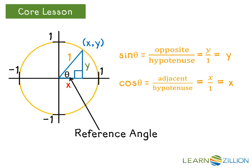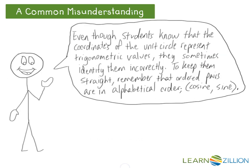This means that the x-coordinate of the point on the unit circle represents the cosine value of the reference angle, and that the y-value represents the sine value of the reference angle. Even though students know that the coordinates of the unit circle represent trigonometric values, they sometimes identify them incorrectly. To keep them straight, remember that ordered pairs are in alphabetical order — in other words, cosine before sine.